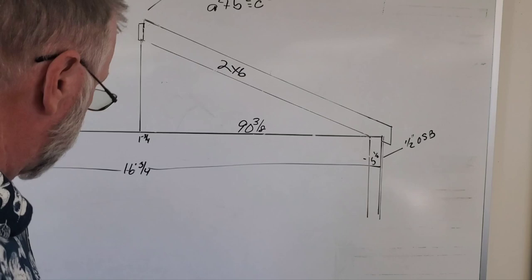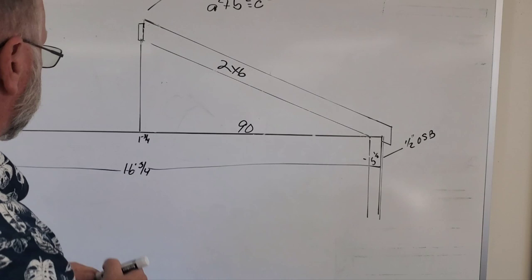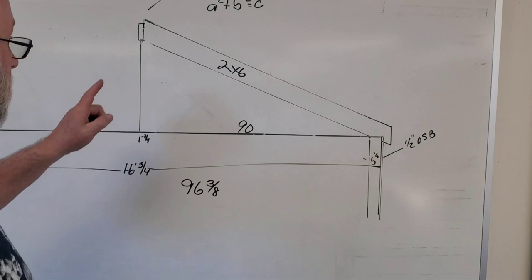First thing I did, I take half of this. So I split this in half, so that's going to be 96. So I'm going to go to inches: 96 and 3/8.